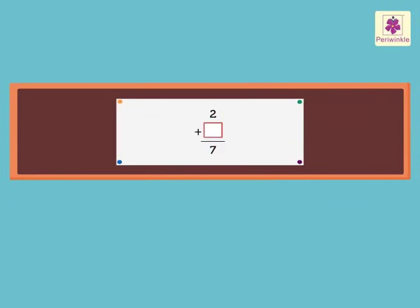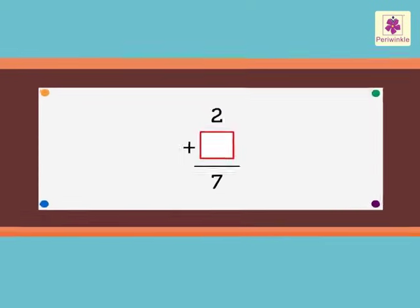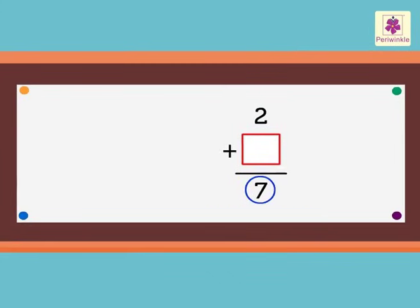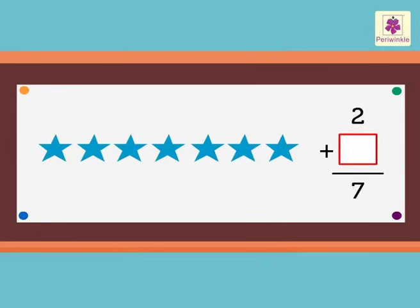Let us try another example and find the missing addend. Look at the given addition. The sum is seven. Let us draw seven stars. The given addend is two. We hide the stars equal to the given addend. Thus, we hide two stars.